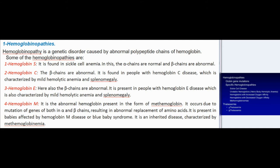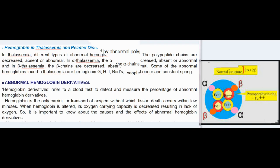Hemoglobin M is the abnormal hemoglobin present in the form of methemoglobin. It occurs due to mutation of genes of both alpha and beta chains resulting in abnormal replacement of amino acids. It is present in babies affected by hemoglobin M disease or blue baby syndrome, an inherited disease characterized by methemoglobinemia.